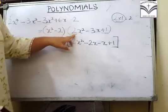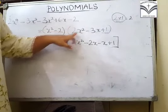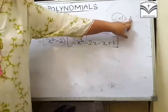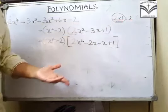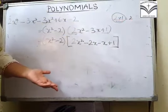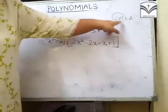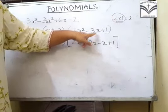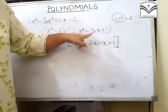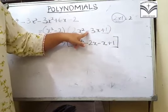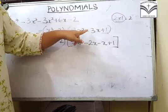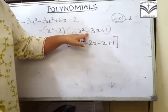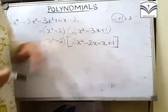x² ka coefficient 2 hai, yahan 1 hai, so 2 × 1 = 2. 2 ke yahi do factors hain: 2 aur 1. In dono factors ko add karne se 3 milega, so addition hai. Isliye dono mein same sign, jo ki yahan minus hai, so dono mein minus aayega.